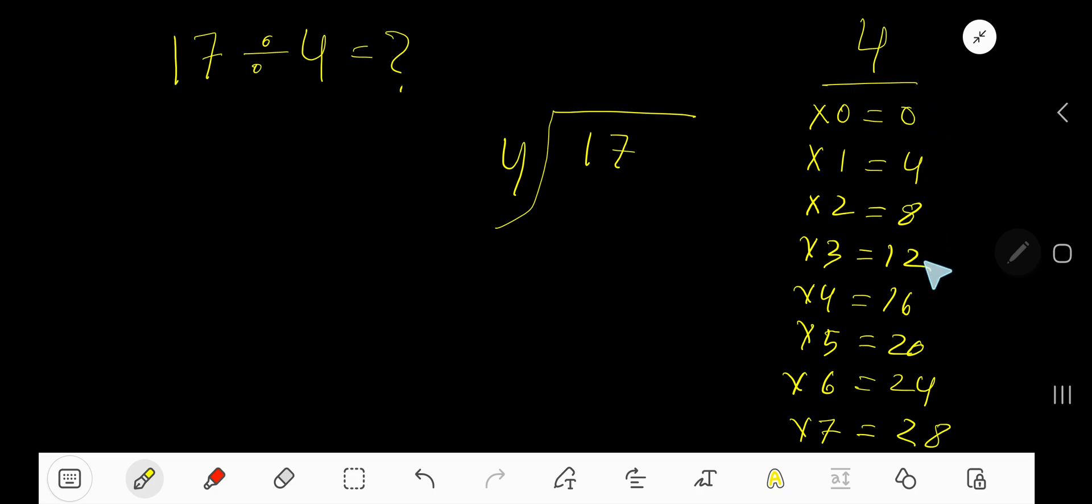4 goes into 1 how many times? Zero times, as 1 is less than 4. 0 times 4 is 0. Subtract and bring down this digit, making it 17.